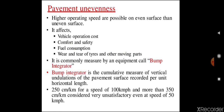Pavement unevenness — if the pavement does not have an even surface, if the pavement has undulations, then it is called unevenness. Higher operating speeds are possible on an even surface than an uneven surface. The presence of undulations on the pavement surface results in discomfort and fatigue to road users, reduces the speed of vehicles, increases operating costs, increases fuel consumption, and can cause wear and tear of tires and other moving parts.